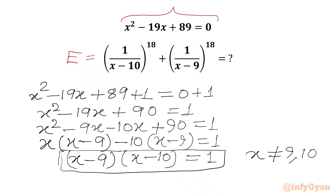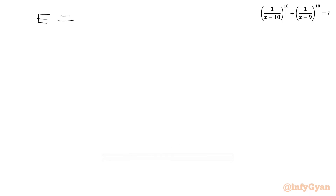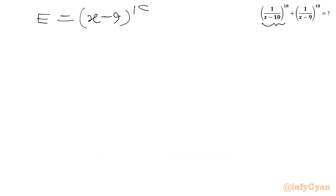From this equation I can write 1 over (x minus 10) equal to (x minus 9), by dividing both sides by (x minus 10). And dividing both sides by (x minus 9), we get 1 over (x minus 9) equal to (x minus 10). So we replace these values in the required expression: E equals (x minus 9) to the power 18 plus (x minus 10) to the power 18.